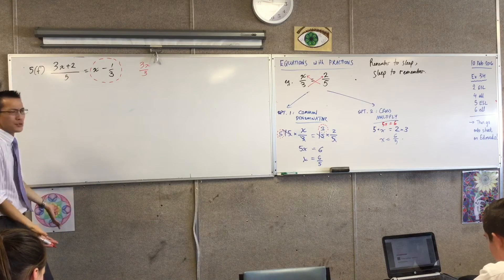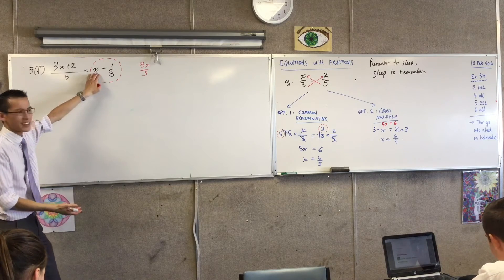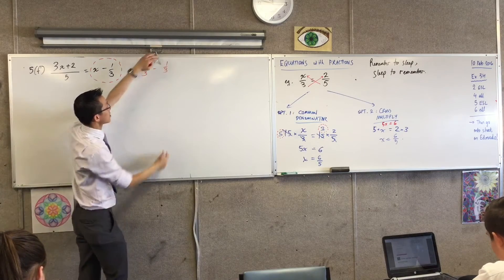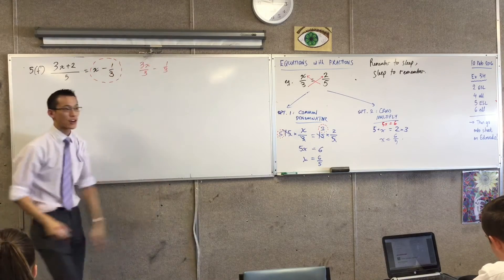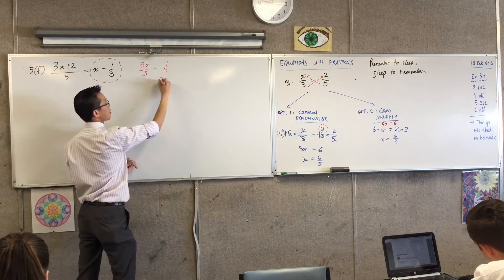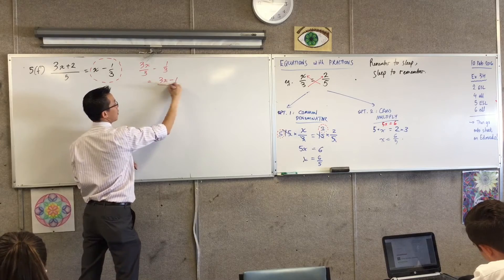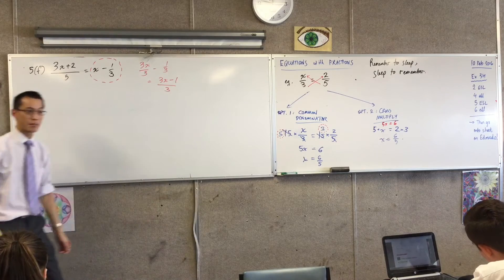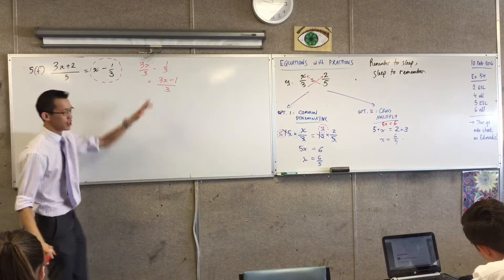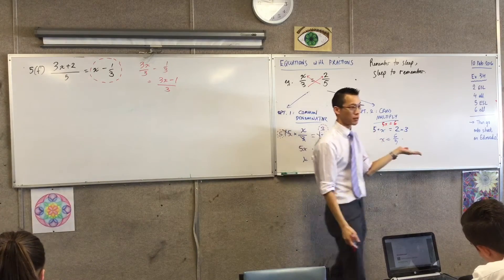Now, it doesn't seem like, why would you do that? Why would you make that more complicated? x is fine. Well, the reason why is so that that can talk to this. Do you see that now, because they have a common denominator, I can make one fraction out of them. That's 3x take away 1 on 3. Do you see that? So if I got to that point, now I have fraction on the left, fraction on the right, and then either of these would be fine. I guess I'd cross multiply.